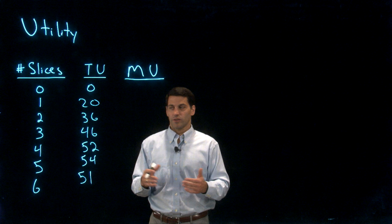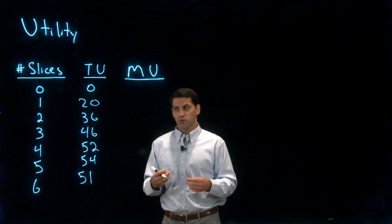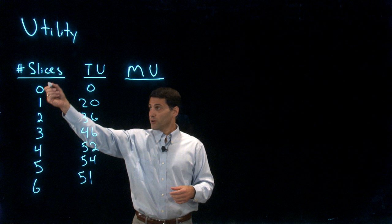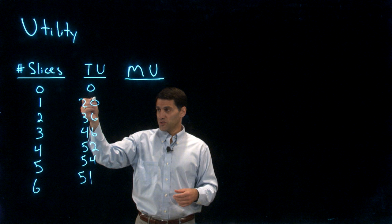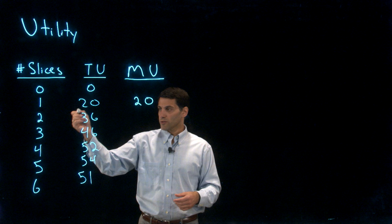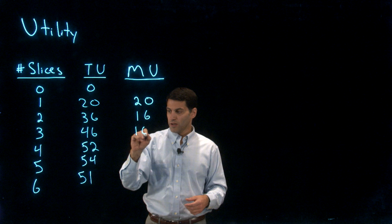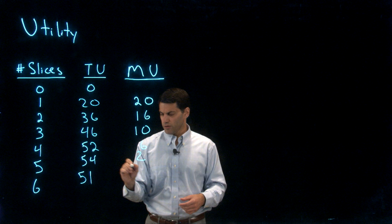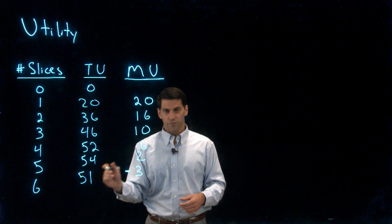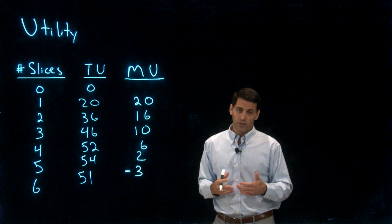Another important concept is marginal utility. Marginal utility is the change in utility that a consumer gets when they consume a bit more of a good. When our hypothetical consumer goes from zero to one slice of pizza, utility goes from zero to 20, so that marginal utility is 20. Going from one to two slices, utility increases from 20 to 36 — so that's 16. The third slice pushes utility up to 46, a difference of 10. From 46 to 52 is 6, then 2, and notice that the sixth slice of pizza actually causes total utility to fall from 54 to 51 — that's a marginal utility of negative 3.